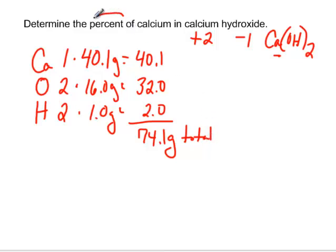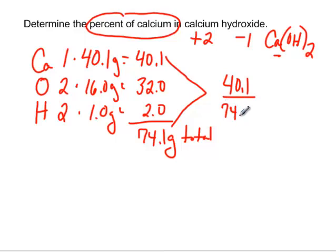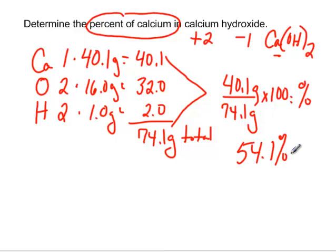And if we want to figure out the percent of calcium, all we have to do is take the part that's calcium and divide it by the total. So 40.1, that's calcium, divided by 74.1, that's the total, and then we multiply that by 100, and we can get our percent. So 40.1 divided by 74.1 times 100 gives us 54.1%.